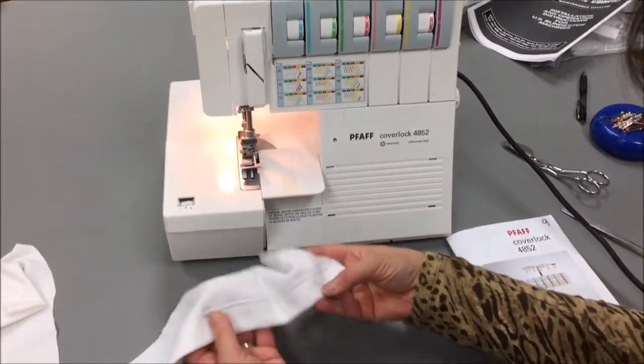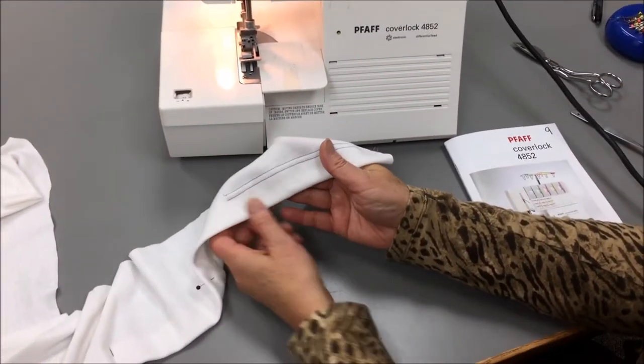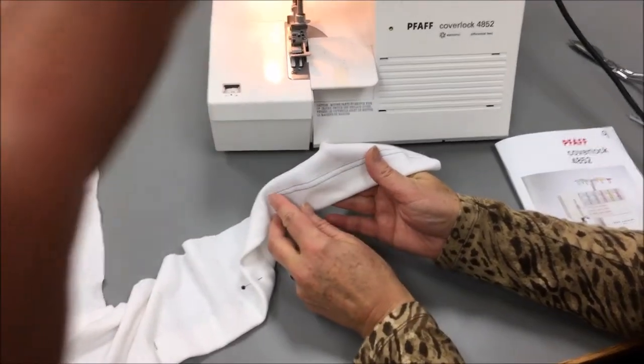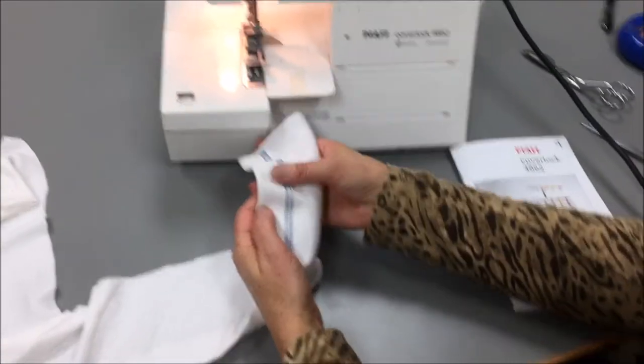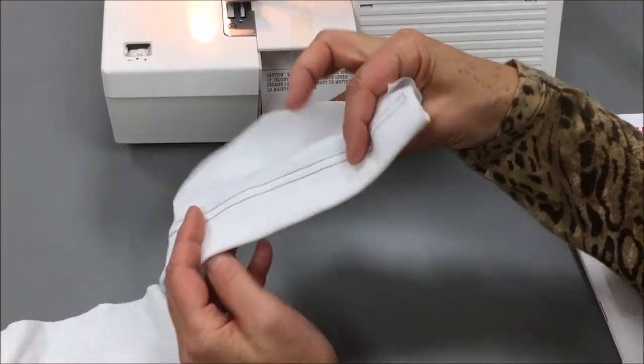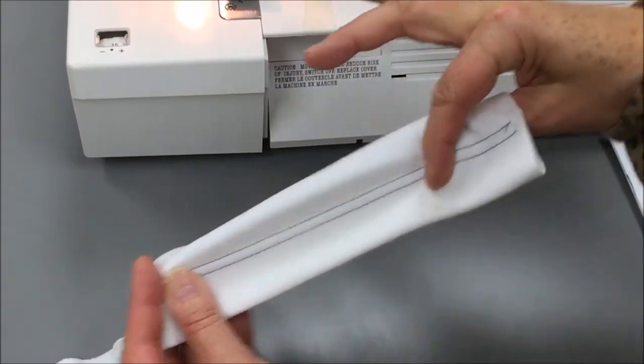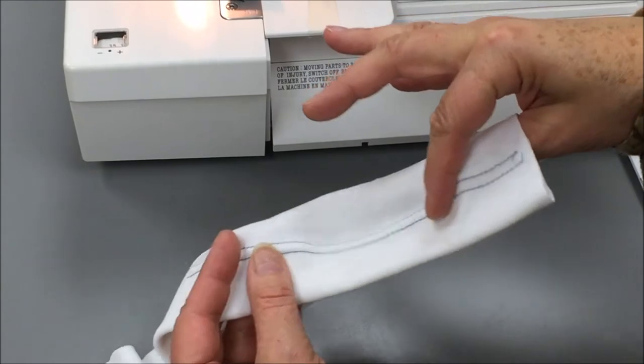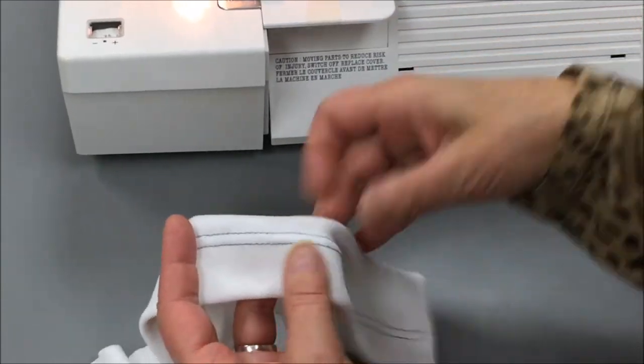This is what the cover stitch hem looks like. It will have two rows of straight stitching on the top and then the serge stitch on the back. It's a great hem for knits, anything that's stretchy because you can stretch that hem and it will not pop.